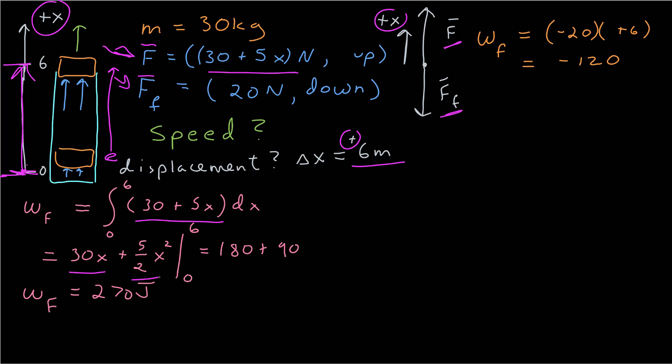Well, now I need the work due to the frictional force. Well, this is easy because the frictional force is constant, and so I can just multiply the force times the displacement, where I use the one-dimensional notation for vectors. 20 is the magnitude. It's pointing in the negative x direction. The displacement is 6 in the positive, so the work due to friction is negative 120 joules.